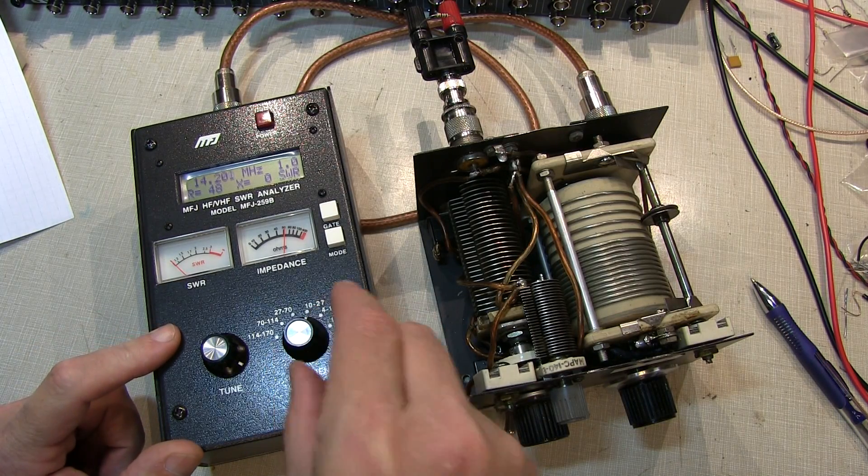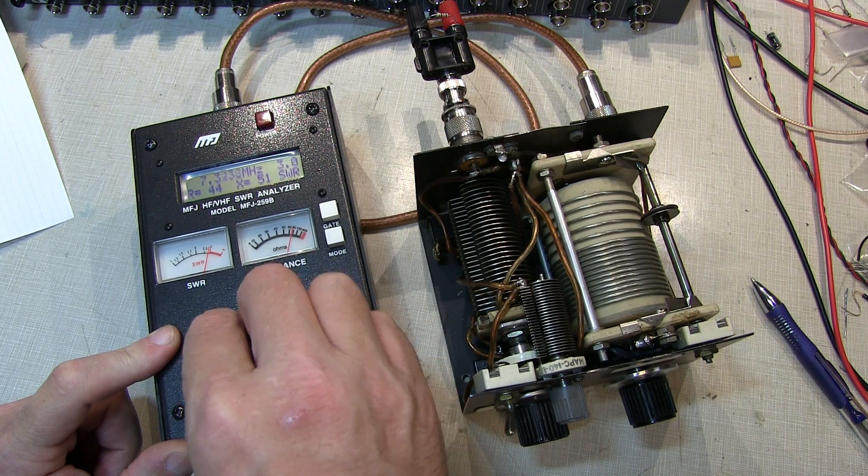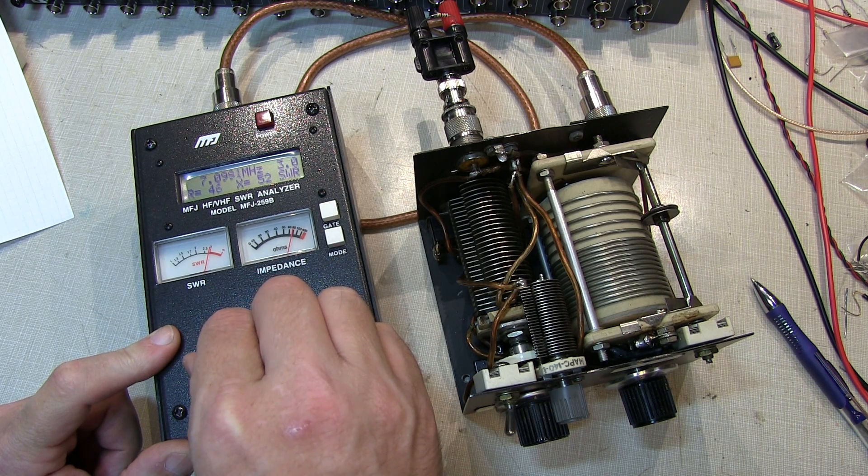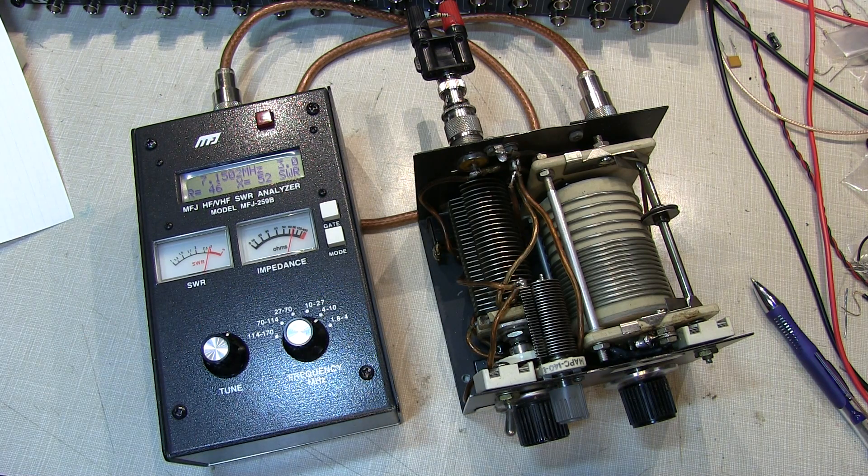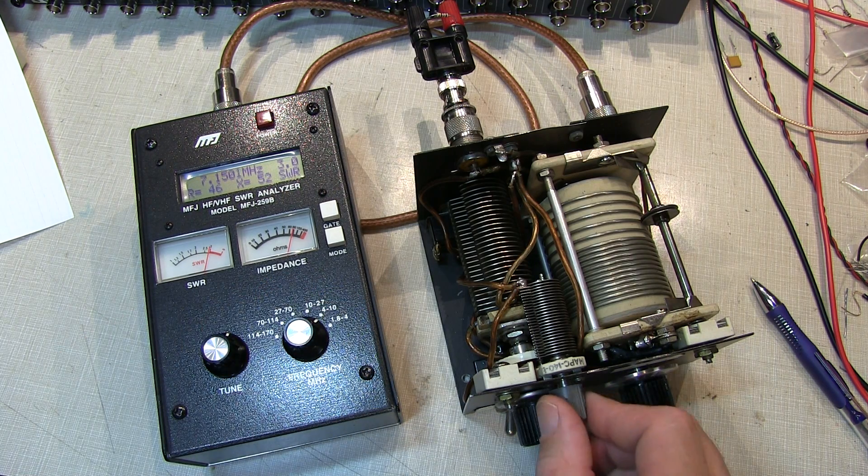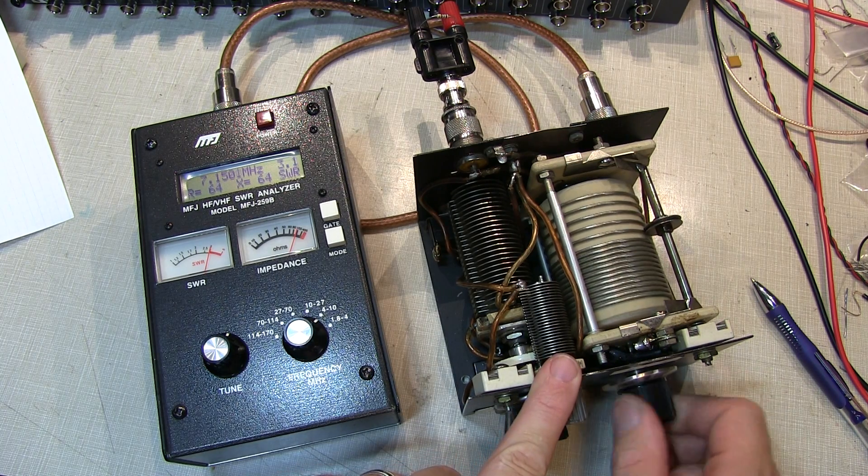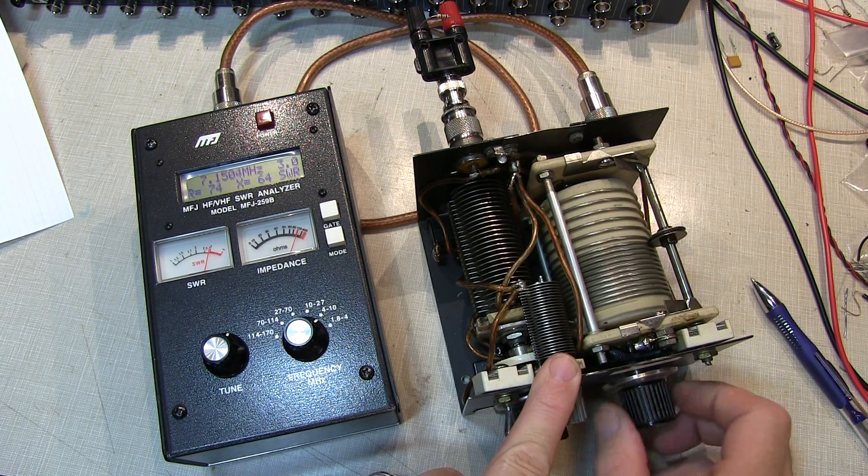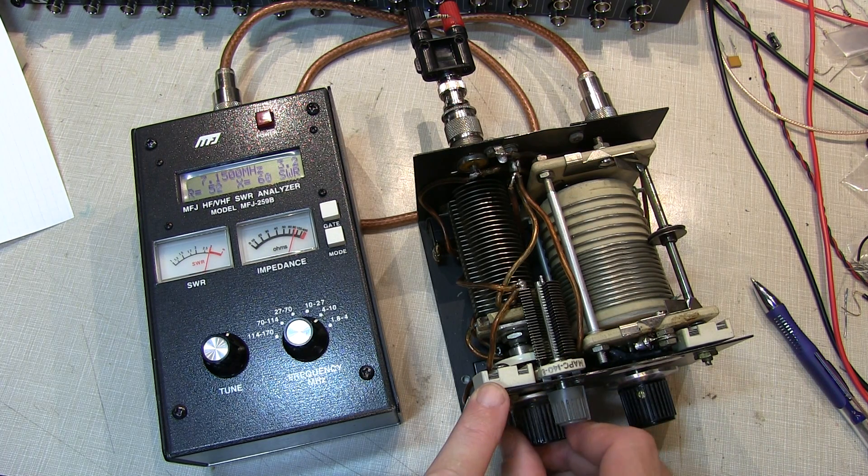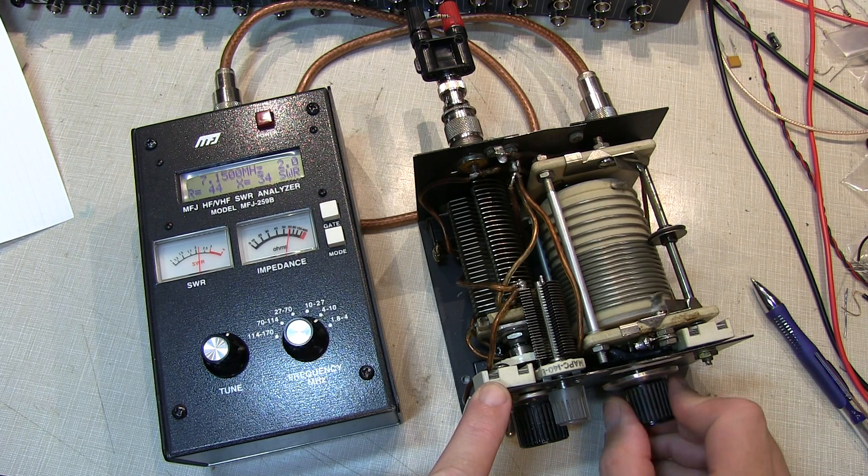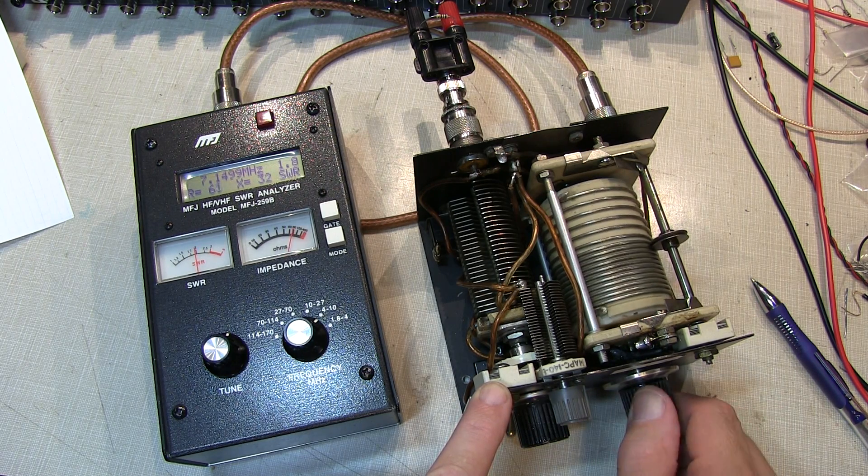Let's check this thing out on 40 meters. That's another band I like to operate a lot. So I'm going to turn this up to, let's go to about 7.14, 7.15 megahertz or so on 40 meters. And again, let's start turning the inductance up here to see if we start getting a dip on the SWR meter. And it looks like I need to add a bit more capacitance here probably to start with. Bring those guys in, and then look for a dip here with the inductor. Okay, looks like we've got it here.